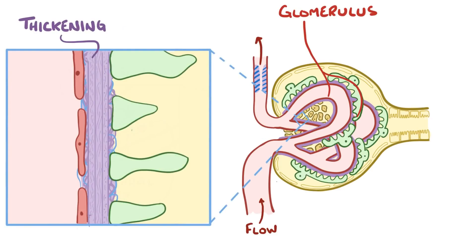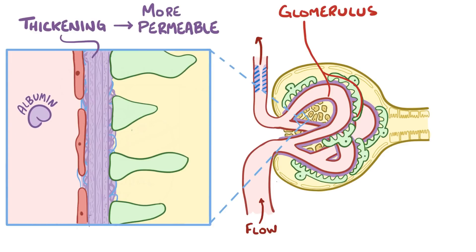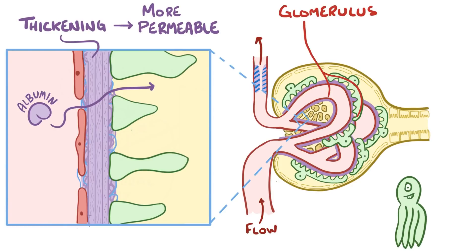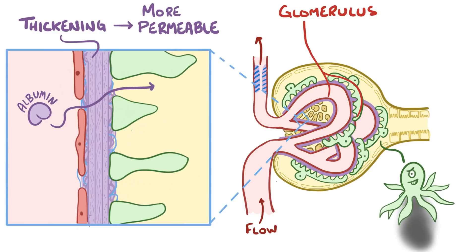The thickening of the basement membrane counter-intuitively makes it more permeable, allowing proteins like albumin through that otherwise would have been filtered out. As the glomerulus expands, the legs of the octopus naturally have larger gaps between them — in other words, the filtration slits widen, making it easier for substances to slip through.